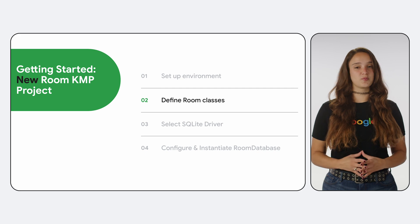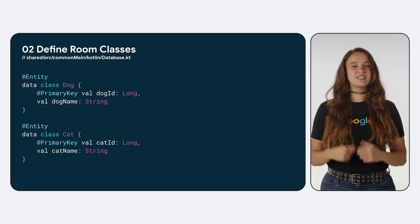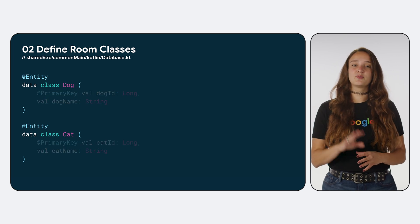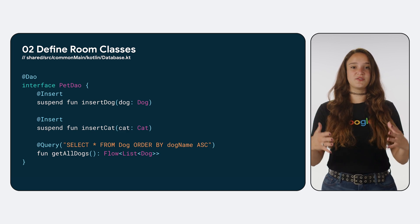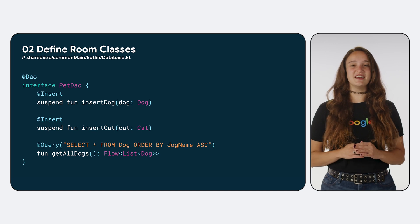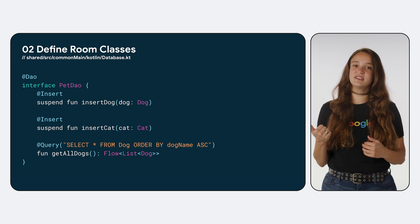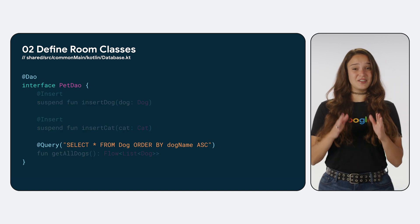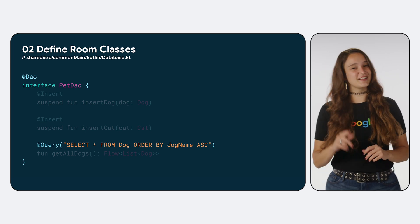Once your environment is set up, you will need to define your Room classes. For example, you might love your pets so much that you want to build a pet database for them. This means you'll need to define a dog entity and a cat entity class, and annotate both with the @Entity annotation. To perform queries on these entities of the Room pet database, you will need to define special functions called DAO functions. These functions make it easy to perform queries on the database and receive results in various return types, such as lists, maps, arrays, and so on. Here we add two simple insert functions and a select query. The awesome part of queries written using the @Query annotation is that Room is able to process any SQL query you provide, no matter how complex.